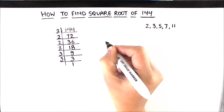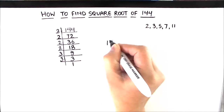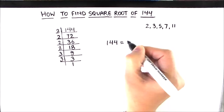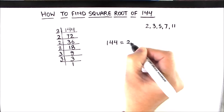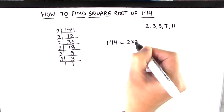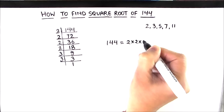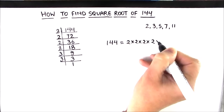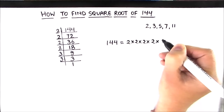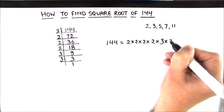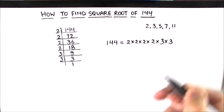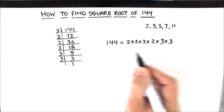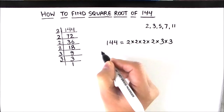Now we are going to write 144 as the product of its prime factors. So 2 times 2 times 2 times 2 times 3 times 3 are the prime factors of 144. For finding the square root, we are going to take the square root on both sides.